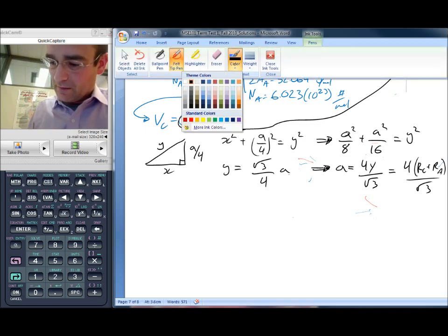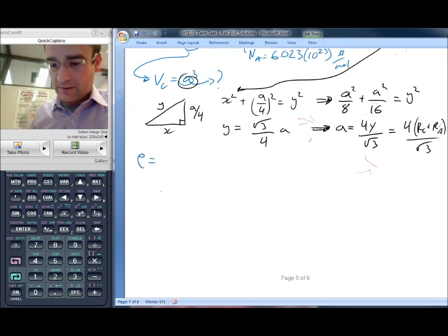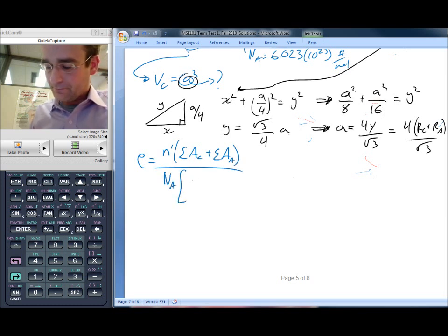So at this point, we've actually completed our equation map. And let me just write it out. We have that the theoretical density for this zinc blend structure is going to be equal to N prime times the sum of the atomic weights of the cations plus the sum of the atomic weights of the anions divided by Avogadro's number and divided by A cubed, which is 4 over root 3 RC plus RA all cubed.